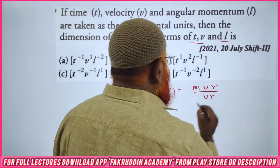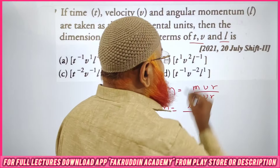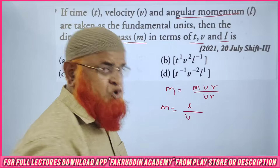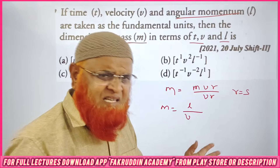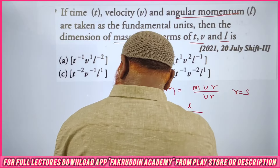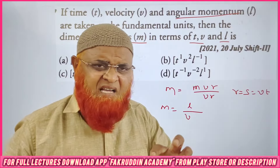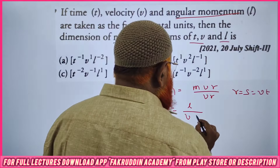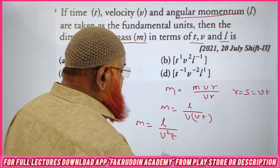Let us see what I am going to write next. The simple thing I am going to do is: MVR I will keep as angular momentum, which is length here. For velocity I will write as usual, but I will take this radius — which is considered as displacement or length — and write this displacement as velocity multiplied by time. Just replace radius with velocity into time, and your work is 90% done. So mass equals angular momentum divided by V squared into T.